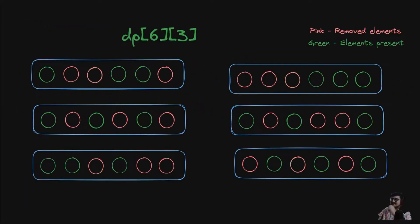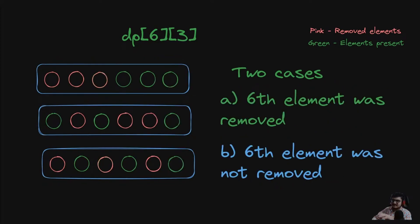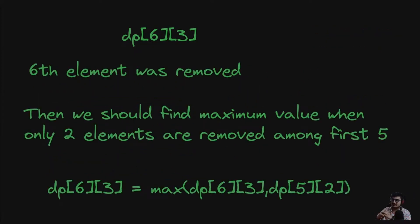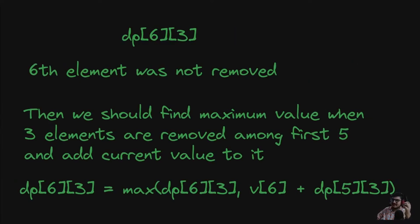To find dp[i][j], we divide into two cases: either the i-th element was removed or it was not. For example, for dp[6][3]: if the 6th element was removed, we find the maximum when 2 elements are removed from the first 5 elements, so dp[6][3] = max(dp[6][3], dp[5][2]). If the 6th element was not removed, dp[6][3] = max(dp[6][3], v_6 + dp[5][3]).